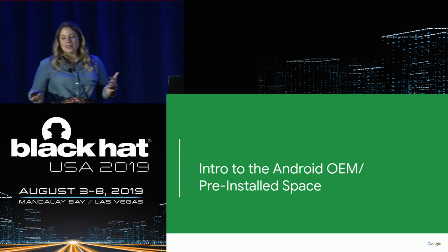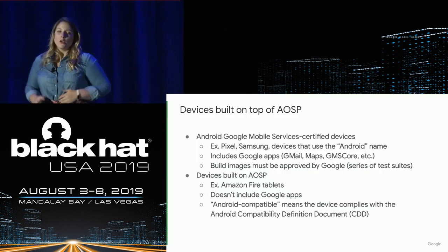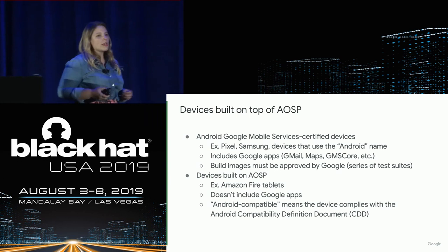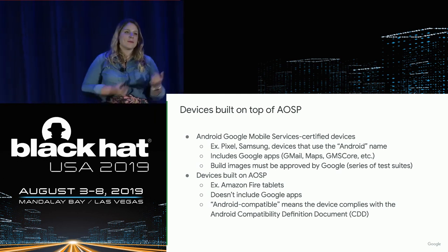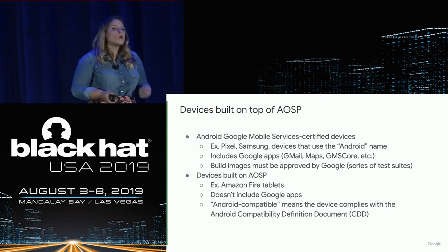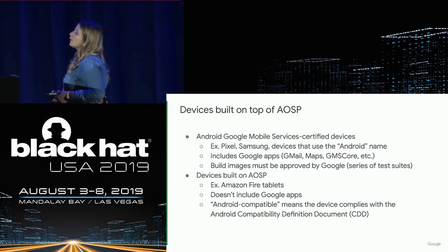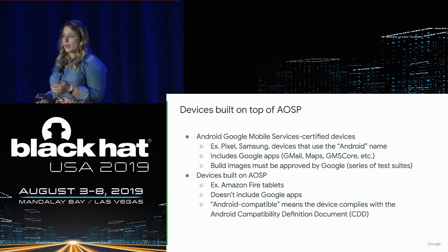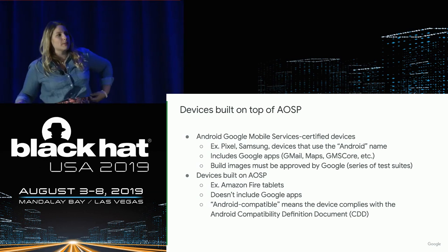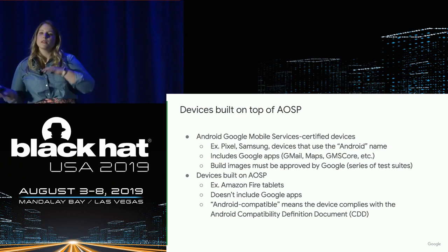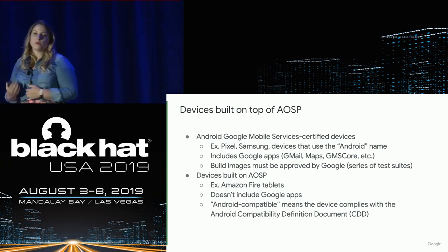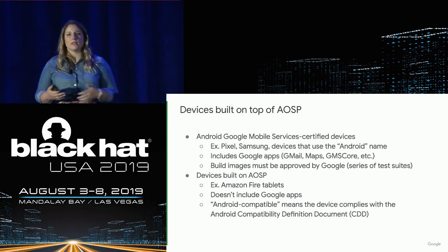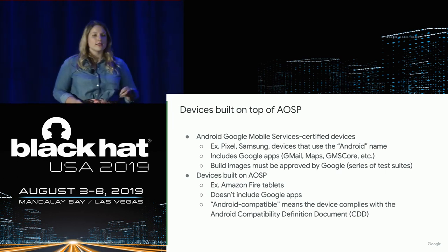So what does the Android OEM pre-installed space look like? We can separate it into two categories. You have certified devices — where the OEM works with Google and licenses all the Google apps, so the device comes with Google Play, Gmail, GMS Core, and things like that. In order to get certification, they have to go through an approval process including a bunch of test suites. Then there's the other category: since AOSP is open-source, those device manufacturers don't need or want the Google apps and are just using the open-source OS — like the Amazon Fire tablet, which has all of Amazon's own customizations. Those devices are just Android-compatible.